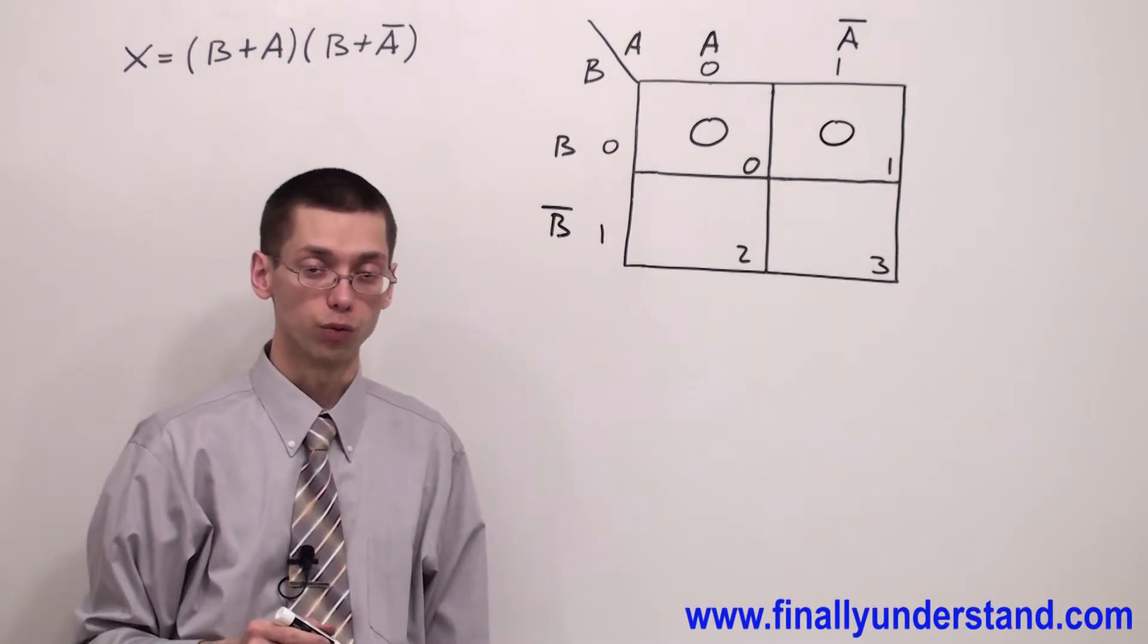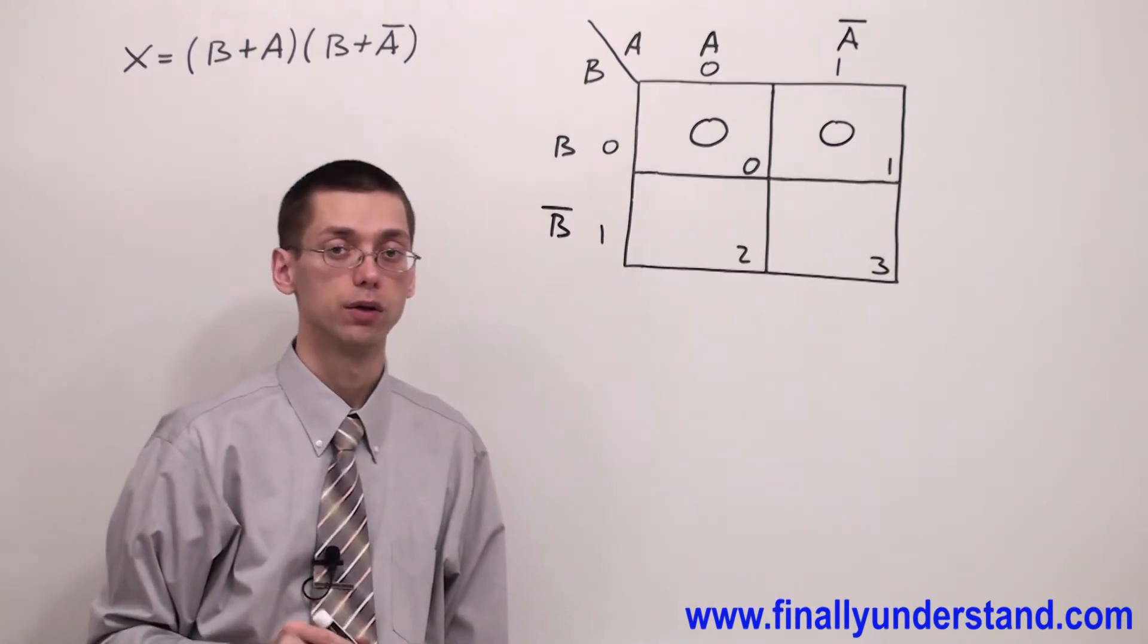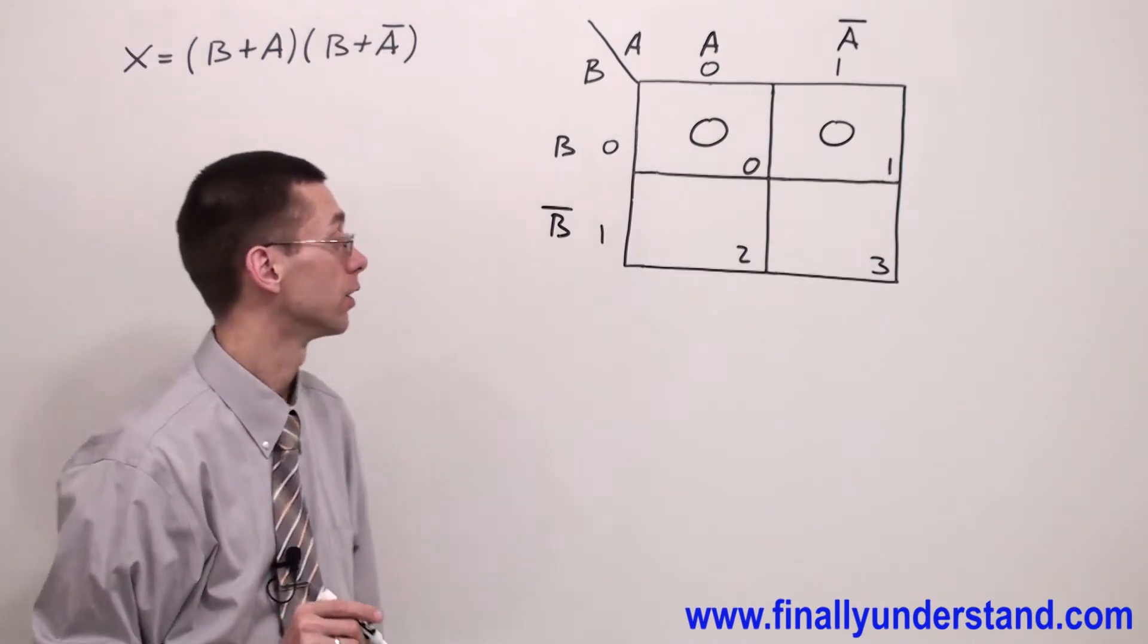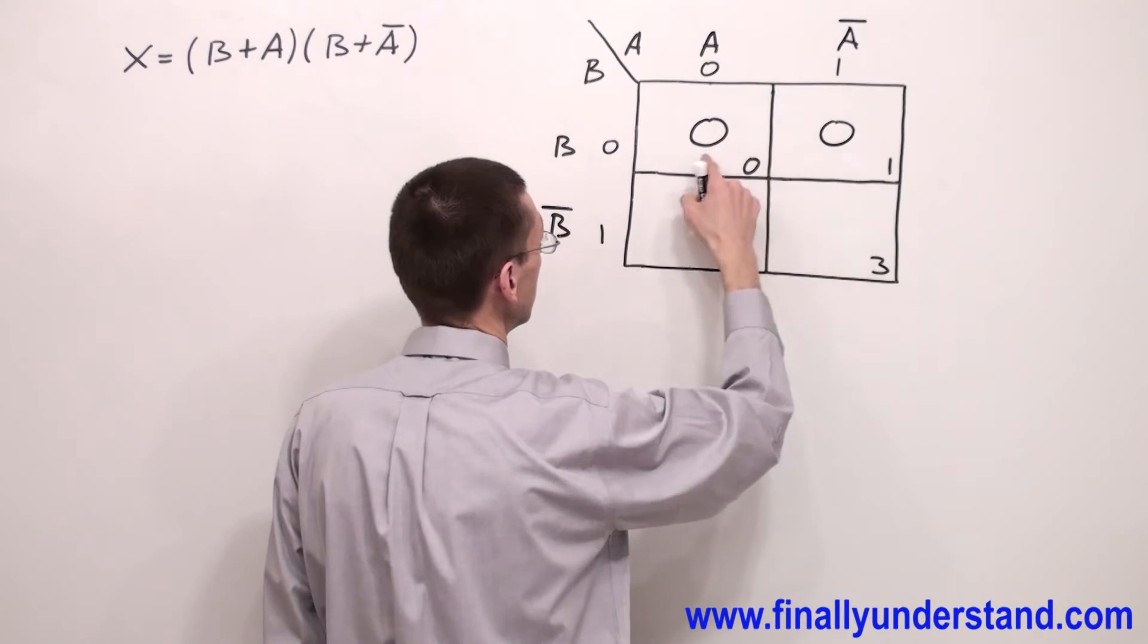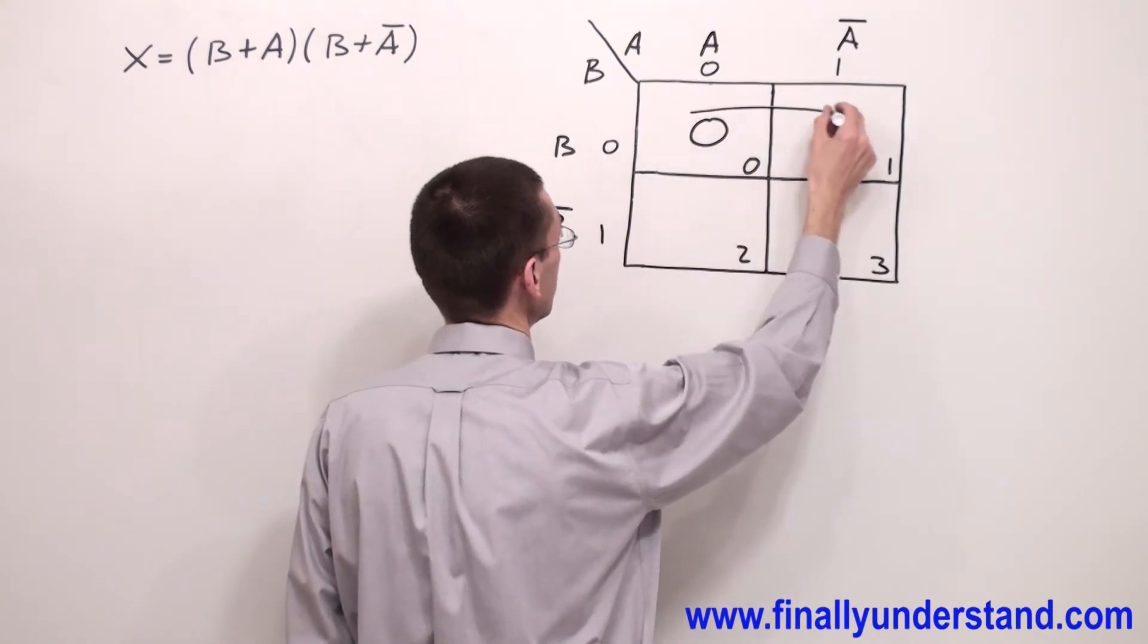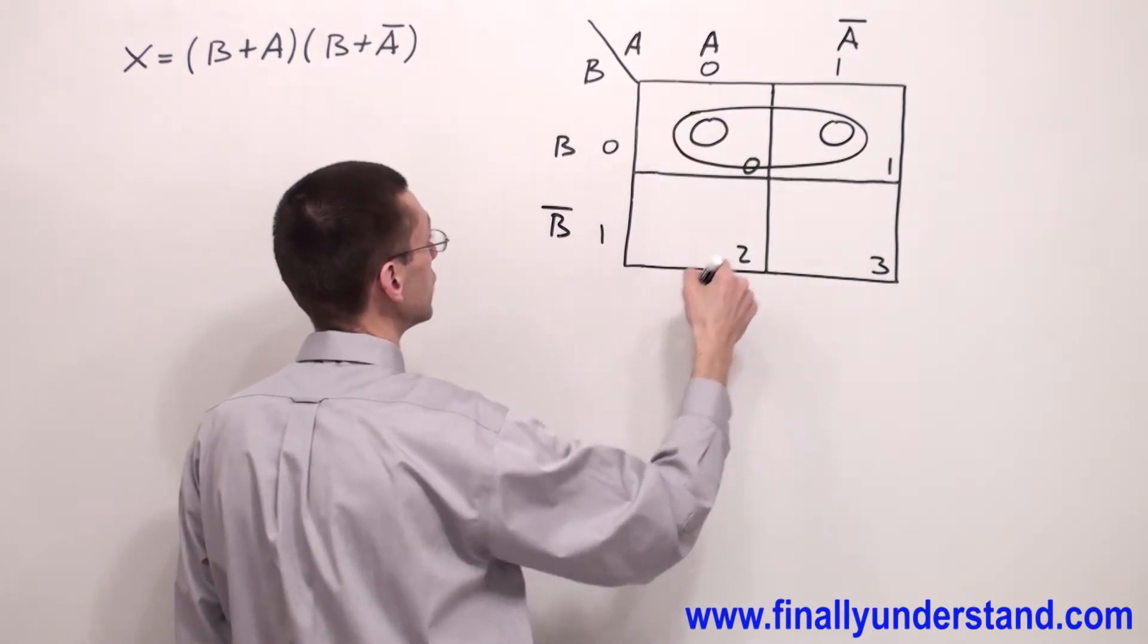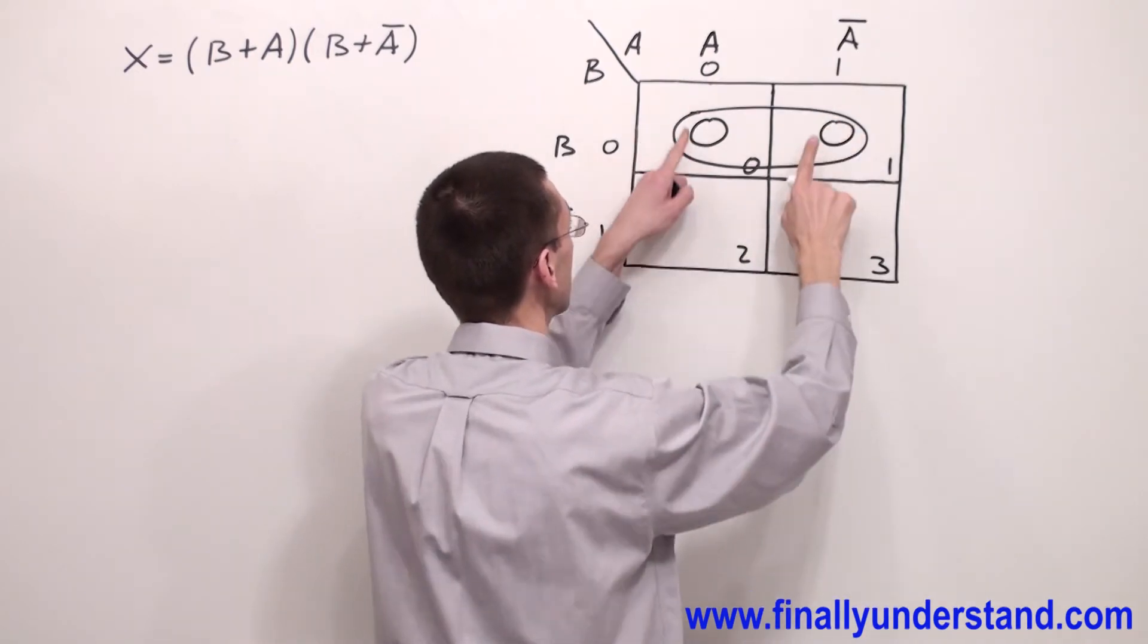We can group zeros for two-variable K-map in groups of 1, 2, and 4. Because these two zeros are next to each other I can group them. And I'm going to have a group placed in one row and two columns.